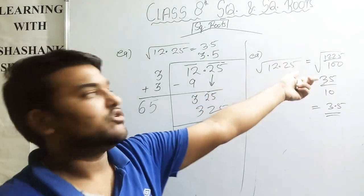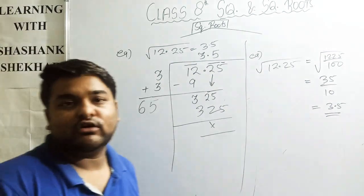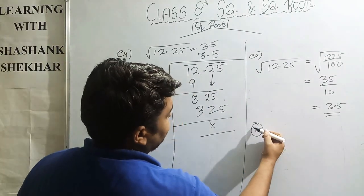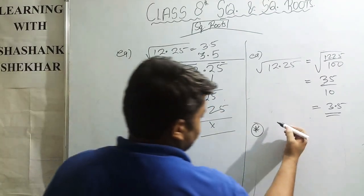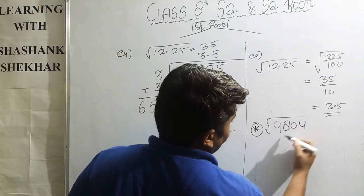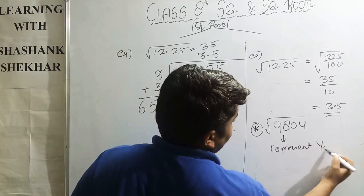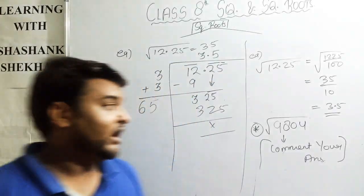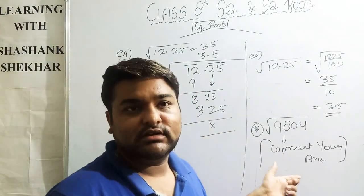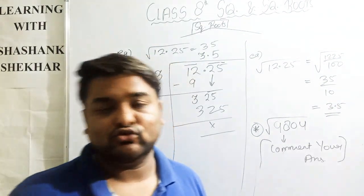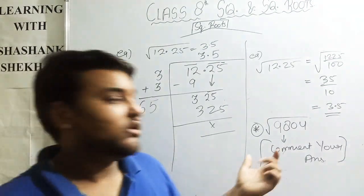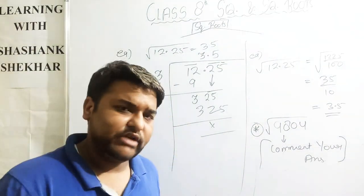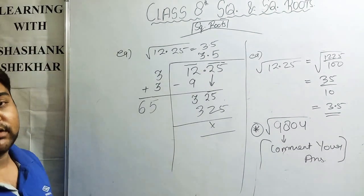We can also verify the square root of 1225 using the long division method. Thank you — stay connected for more updates. Here is one practice question for you: find the square root of 9804. Comment your answers. You should also check whether 9804 is a perfect square number, find its square root, and if it is not a perfect square, we will tell you about the approximate value in the comments.